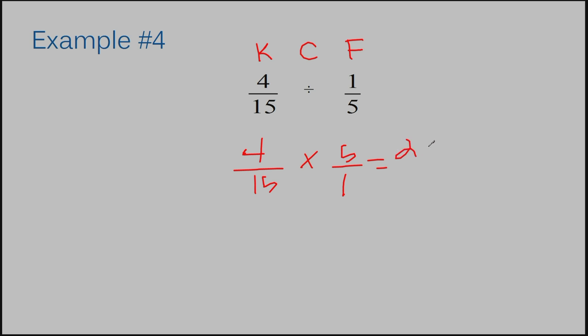4 times 5 is 20. 15 times 1 is 15. We're ending with an improper fraction here, so we need to convert this. I know that 15 goes into 20 one time. It has a difference of 5, and my denominator is going to remain the same, 15.